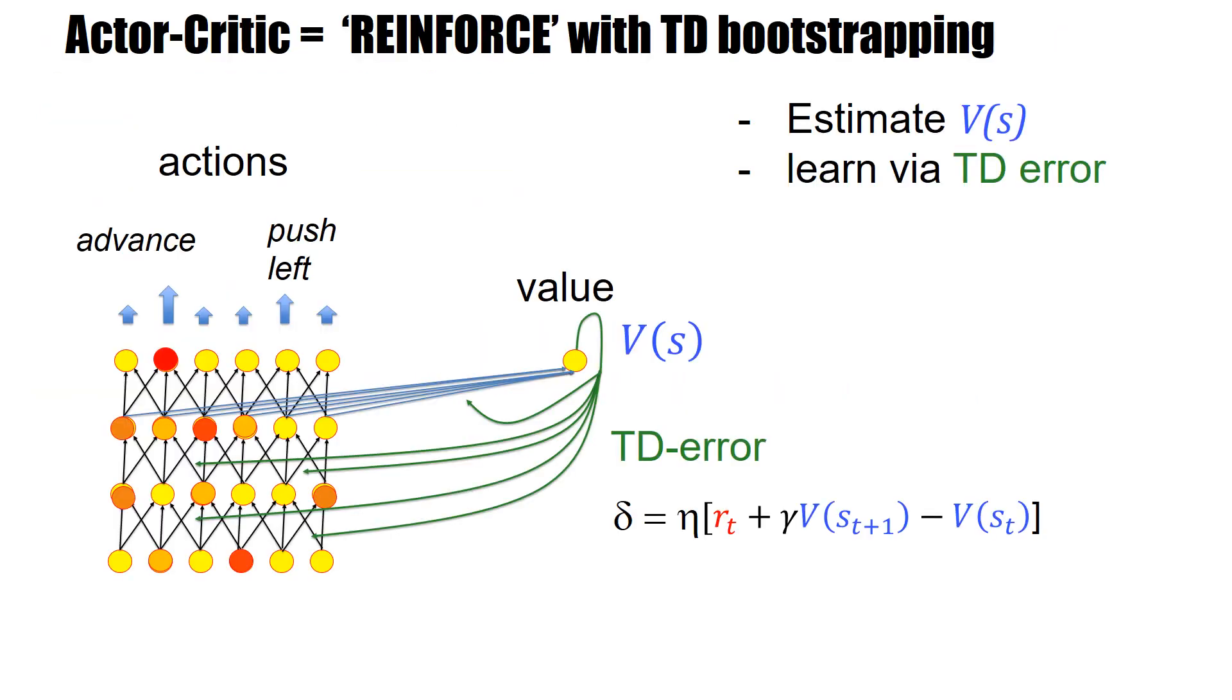So in the previous videos, we have seen that the network has two sets of outputs. There is an action output in the first network, and then there's a value output.